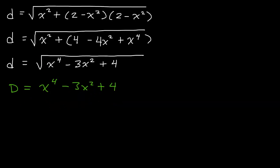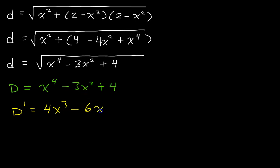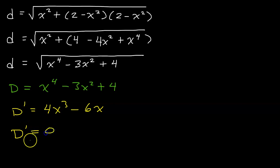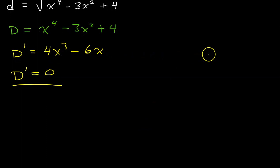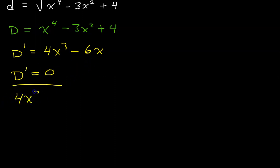So we are going to do the first derivative test. The first derivative will be 4x to the 3rd power — using the power rule — minus 6x. And that's it; this is the first derivative. Now we need to find the critical numbers by setting the derivative equal to 0. So: 4x cubed minus 6x equals 0.